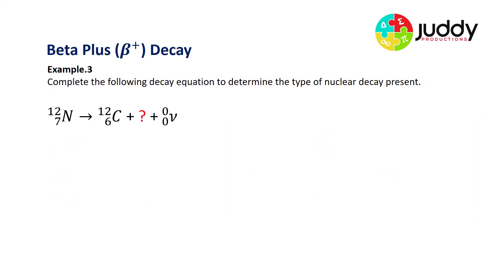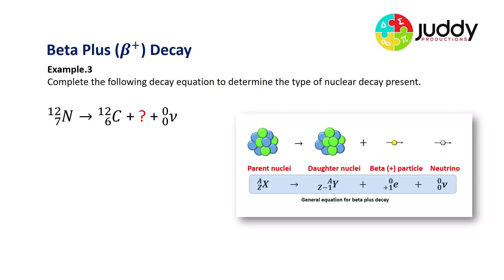Our final example, number three, complete the following decay equation to determine the type of nuclear decay present. Here's our equation with an unknown question mark in the middle. So here's our general rule, our general equation for beta plus decay. We can tell it's beta plus decay because the mass number of the parent nuclei is the same as the mass number for the daughter nuclei. And we can see that the daughter nuclei's atomic number has been reduced by one, which follows the rule for general beta decay. Also, we have neutrinos being produced, which is one of the products of the beta plus decay.